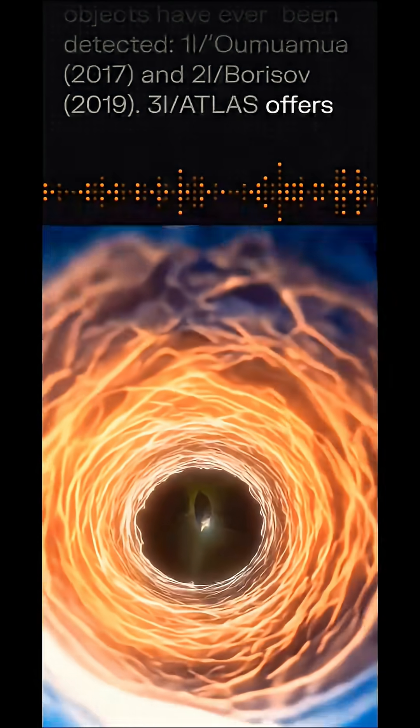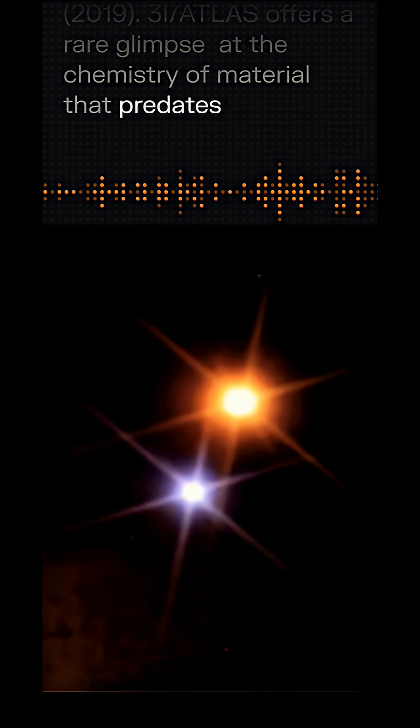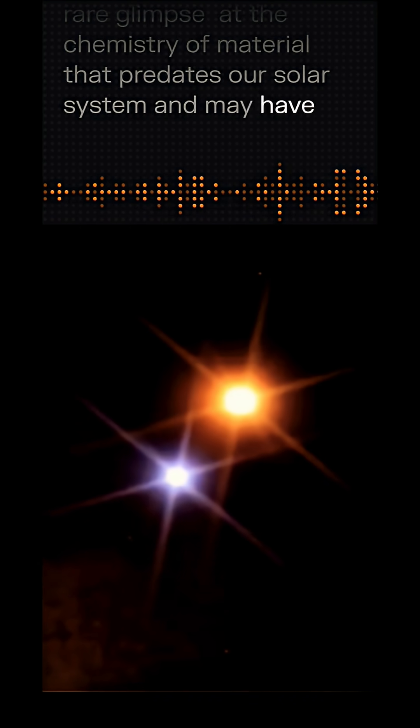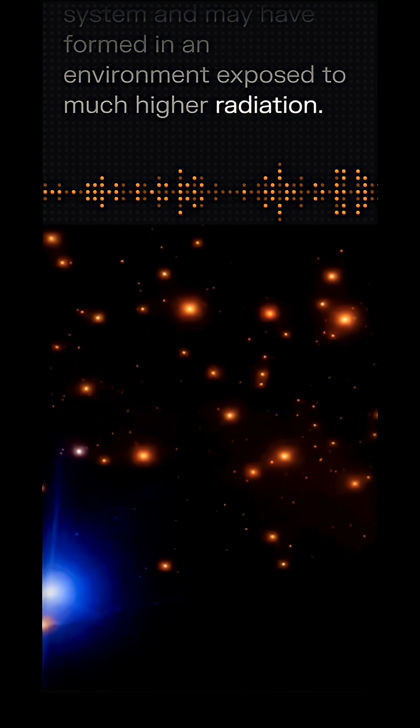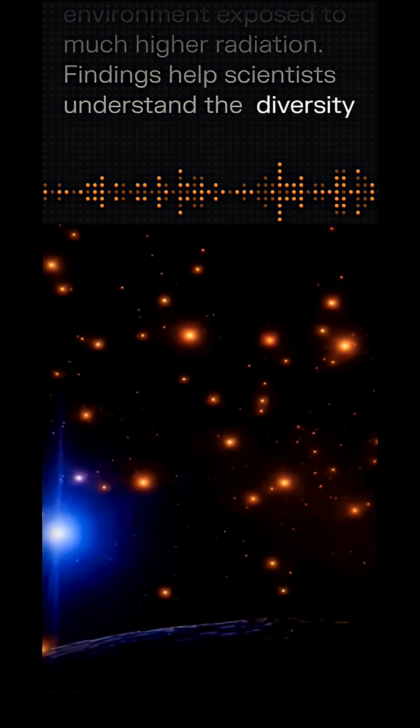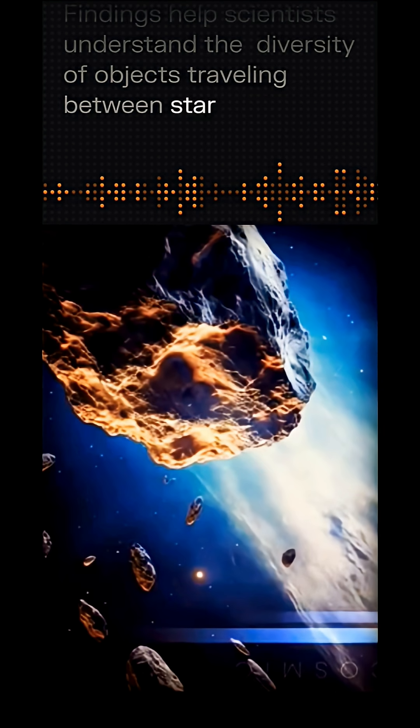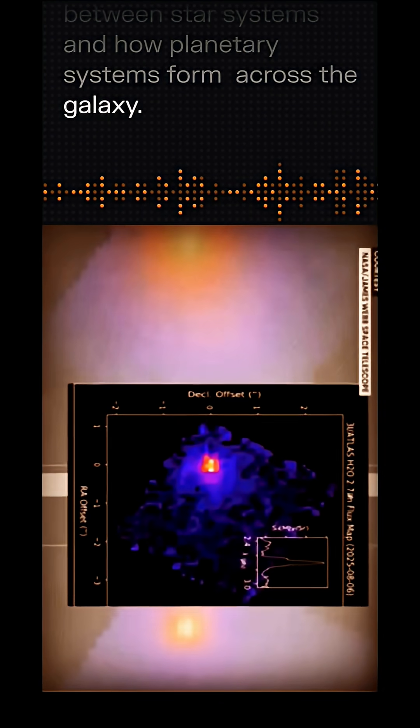3I Atlas offers a rare glimpse at the chemistry of material that predates our solar system and may have formed in an environment exposed to much higher radiation. Findings help scientists understand the diversity of objects travelling between star systems and how planetary systems form across the galaxy.